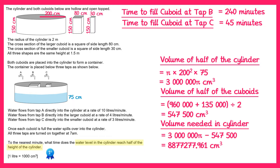It makes sense to convert this into litres, so we'll divide by 1000, giving us 8,877.277961 litres. This is the amount of water that needs to go directly into the cylinder.